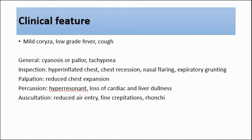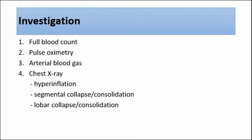For investigations, first we can do a full blood count to look at the white cell count level — if it is high, it suggests infection. Second, we can do pulse oximetry to obtain the oxygen saturation and also to assess the severity of the bronchiolitis. Third is arterial blood gas, to obtain the partial pressure of oxygen and carbon dioxide. We might see a low partial pressure of oxygen and high partial pressure of carbon dioxide in bronchiolitis, which suggests type 2 respiratory failure in severe cases. Fourth is chest X-ray to look for signs of hyperinflation, like if we can see more than 6 anterior ribs or more than 7 posterior ribs.